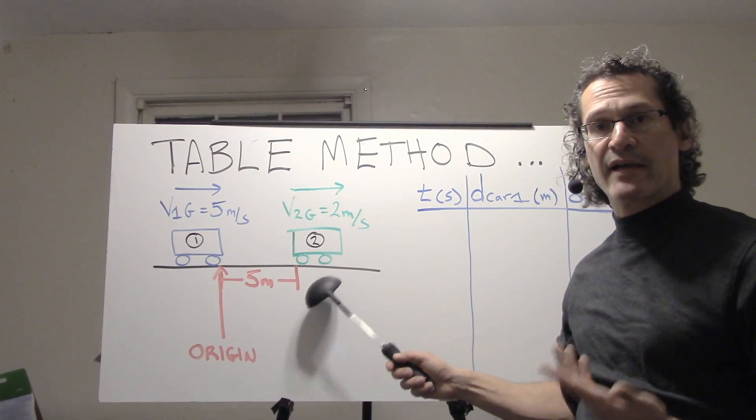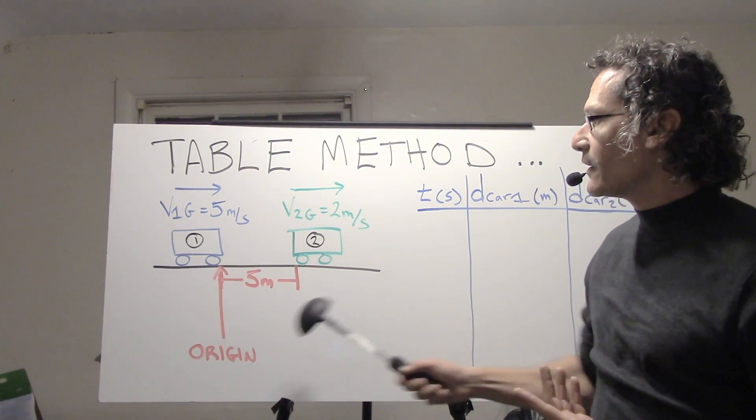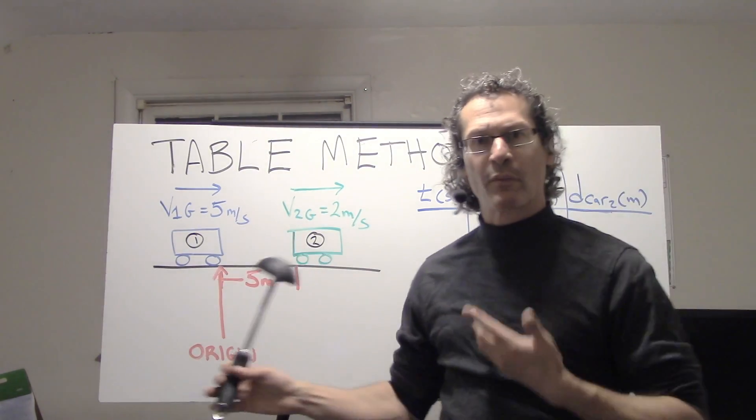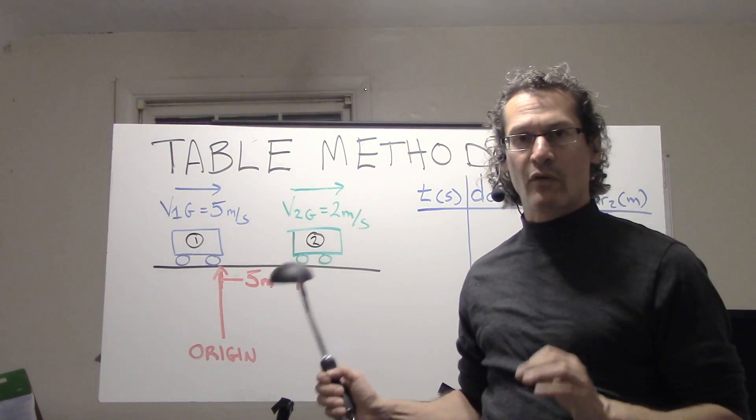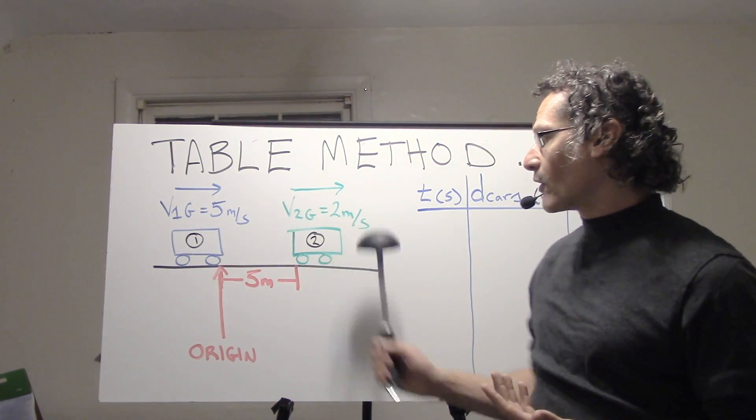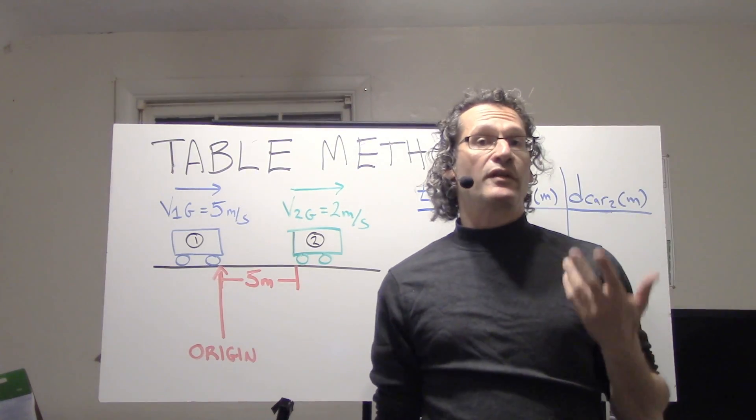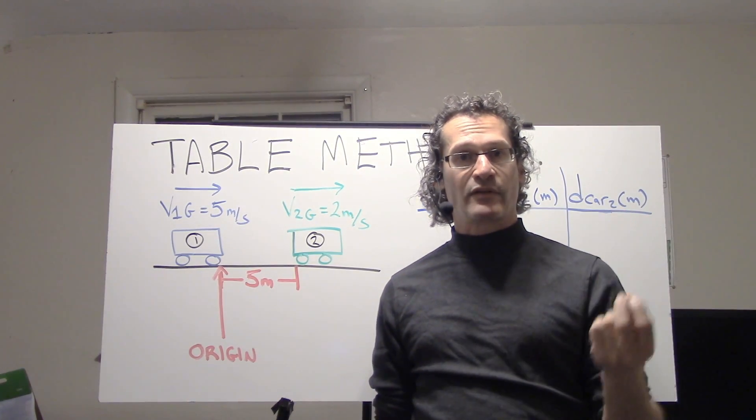We have this five meter lead by car two, and we want to know when car one will overtake car two. First thing we actually need to do is choose and select an origin.